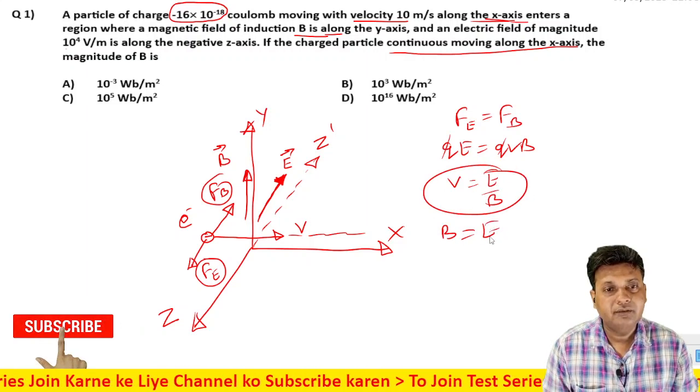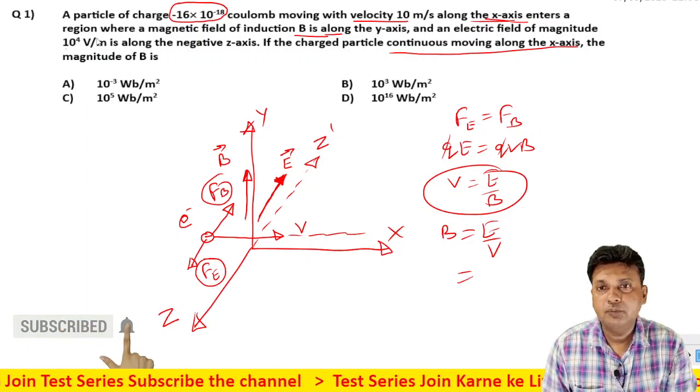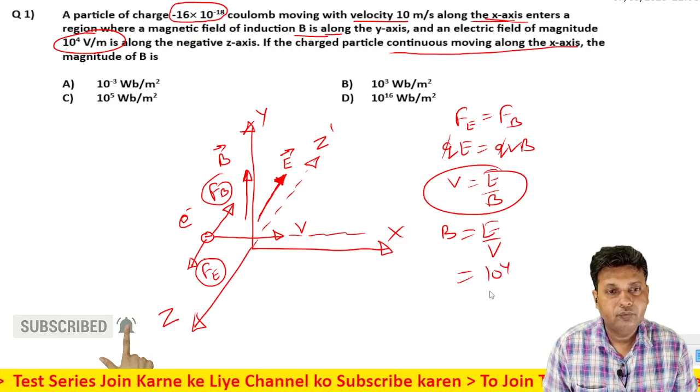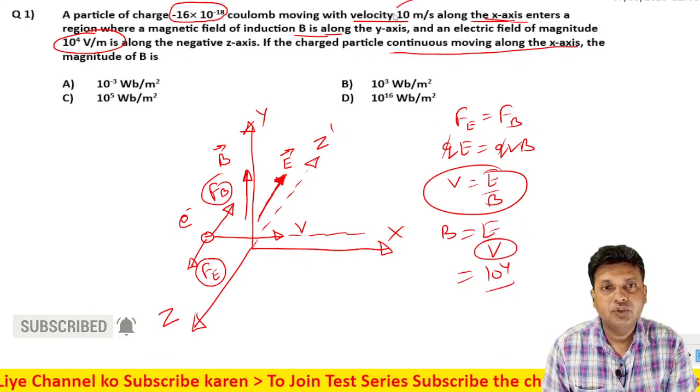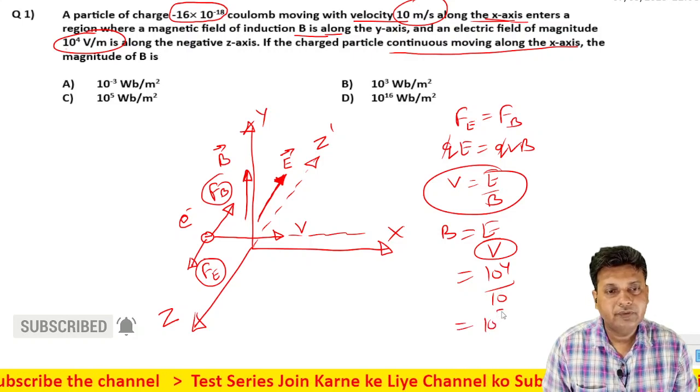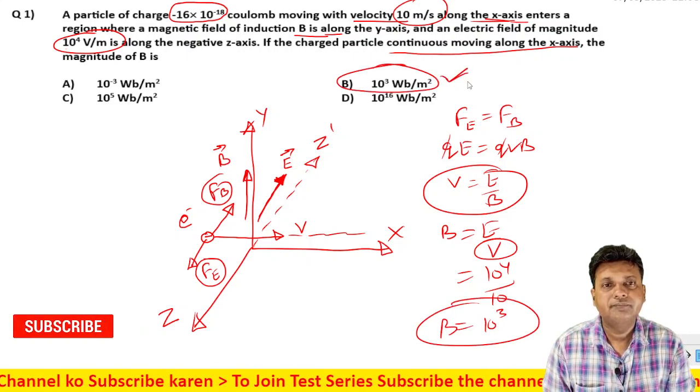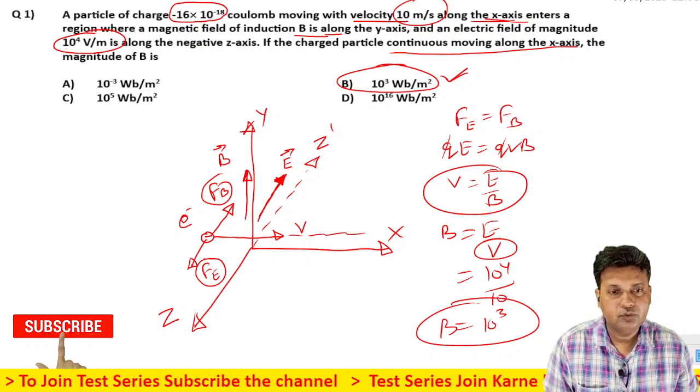Taking the values from the question: E value is 10^4 volt per meter, velocity value is 10 meter per second. So B = E/V = 10^4/10 = 10^3. The answer is 10^3 tesla, which is option B.